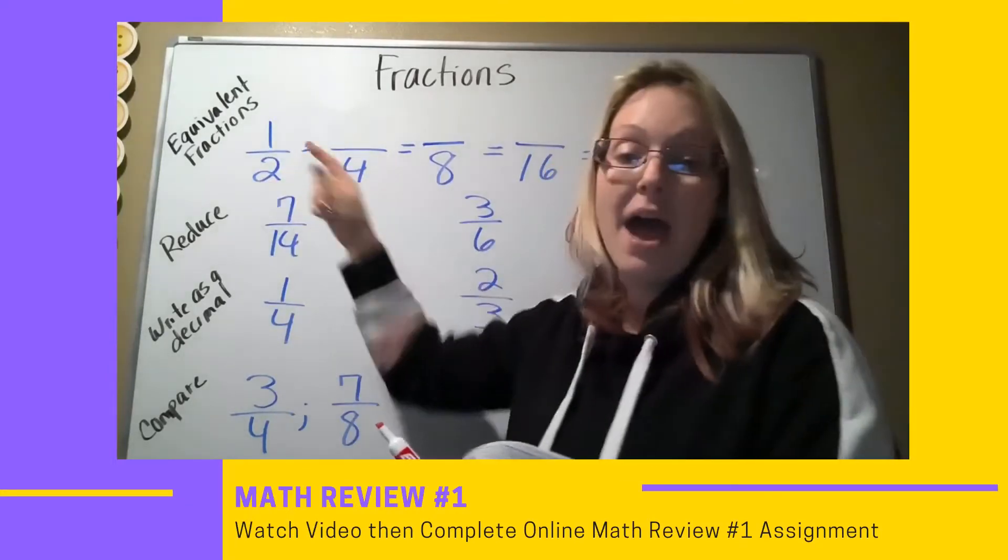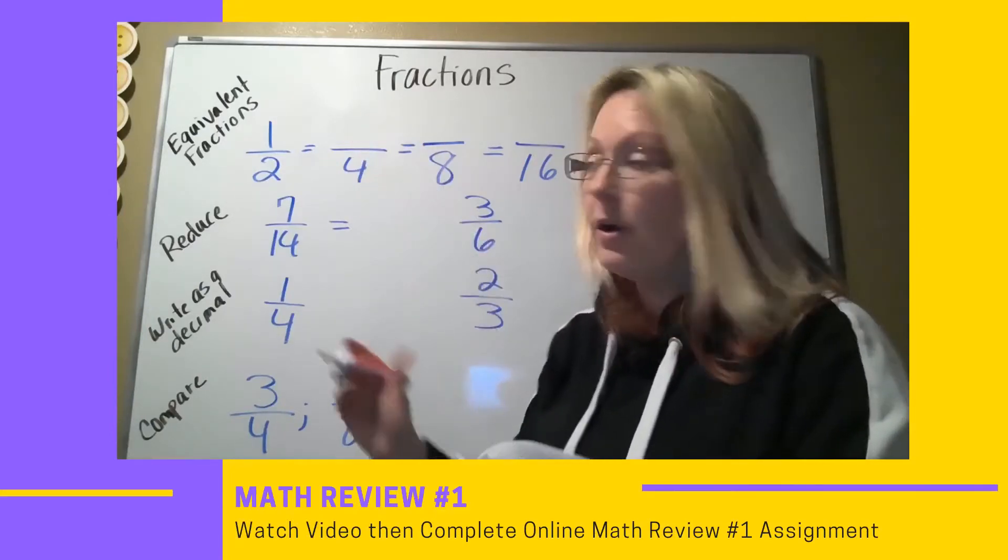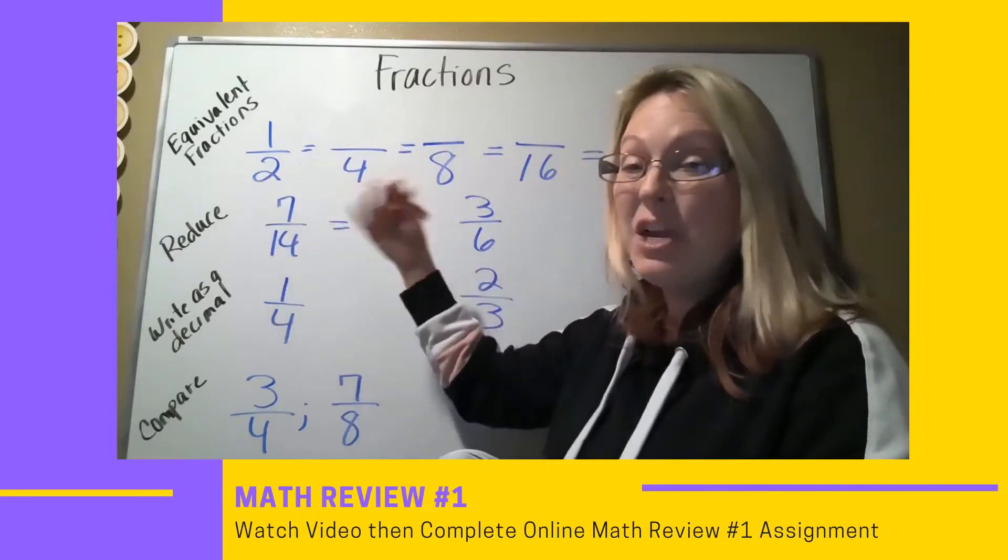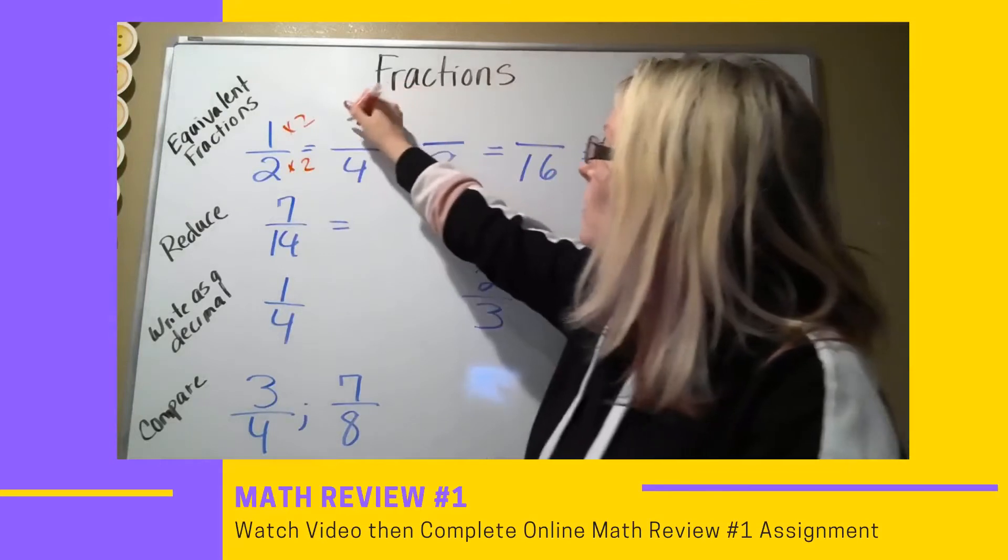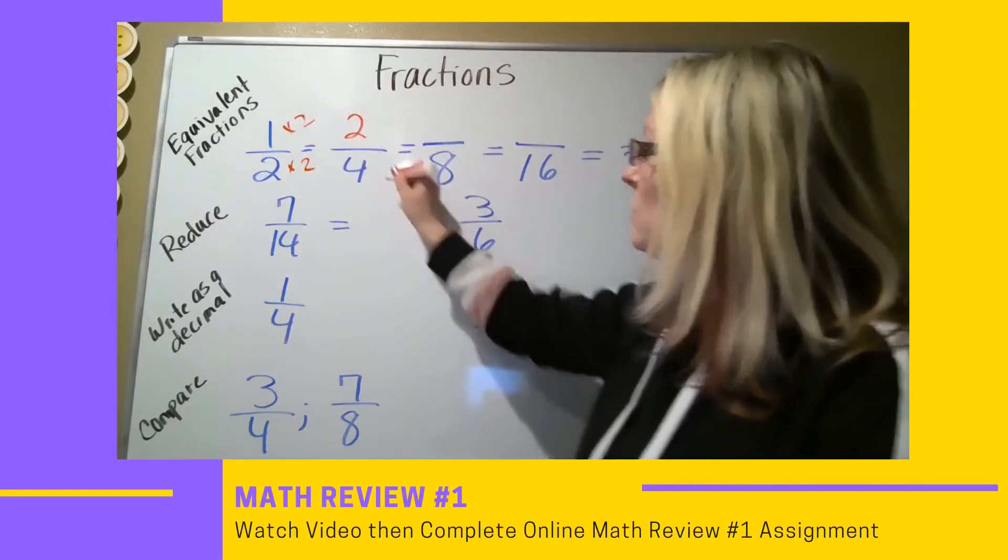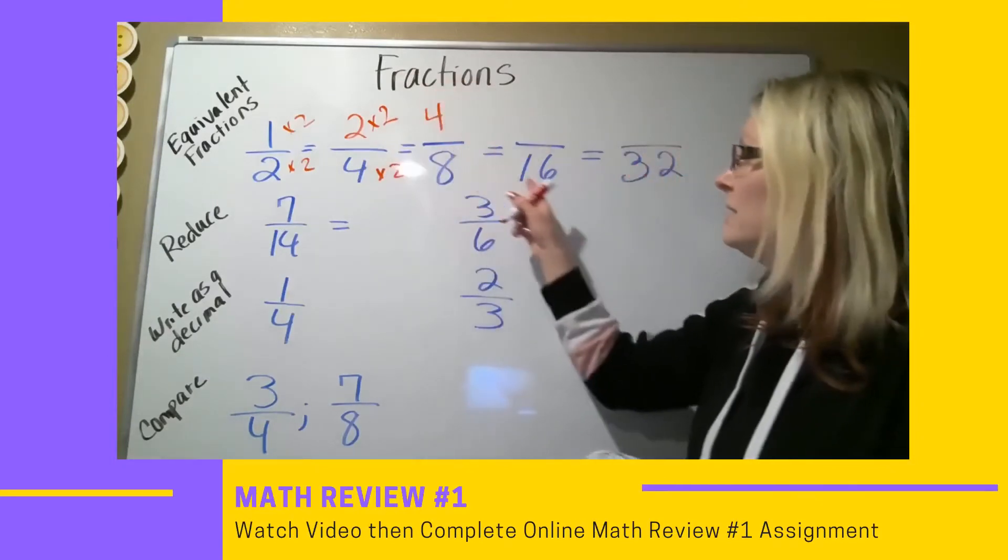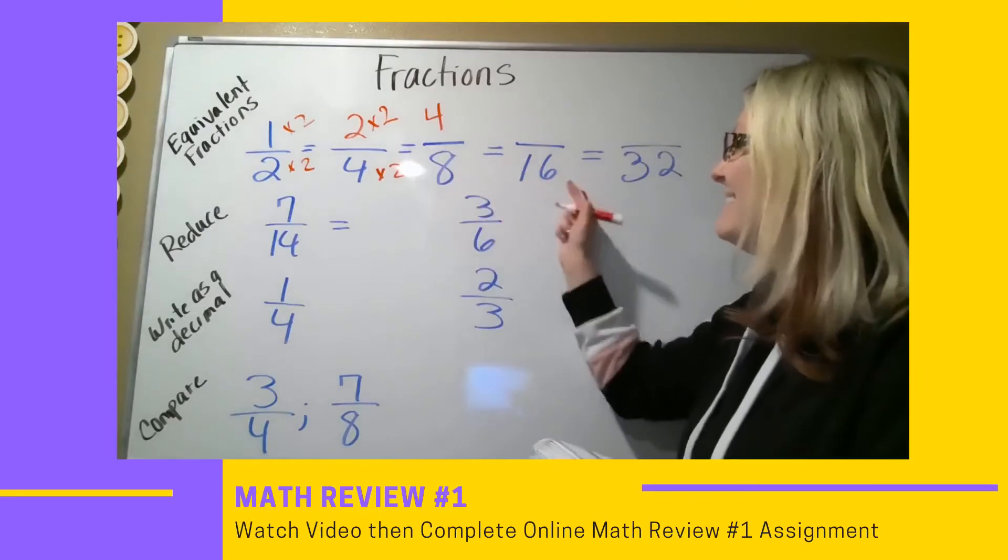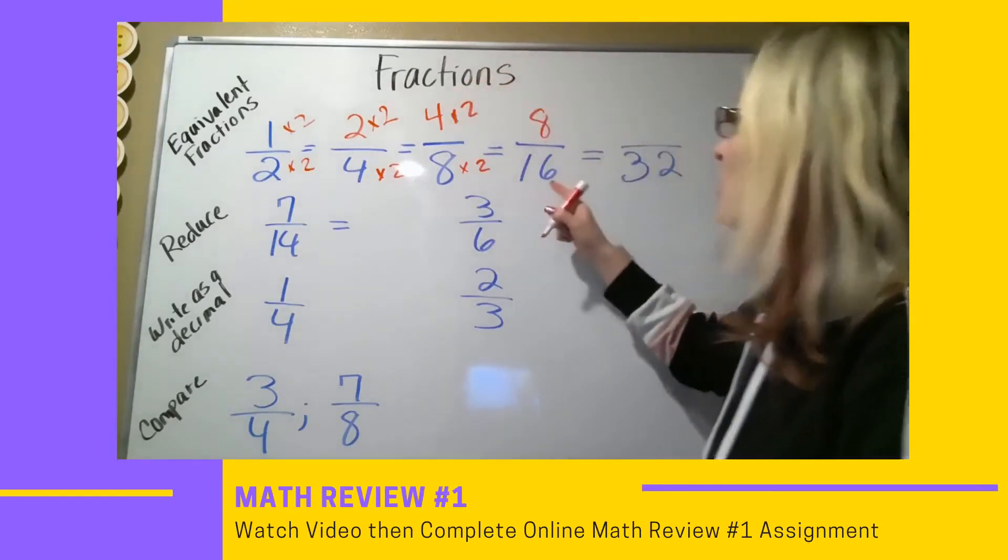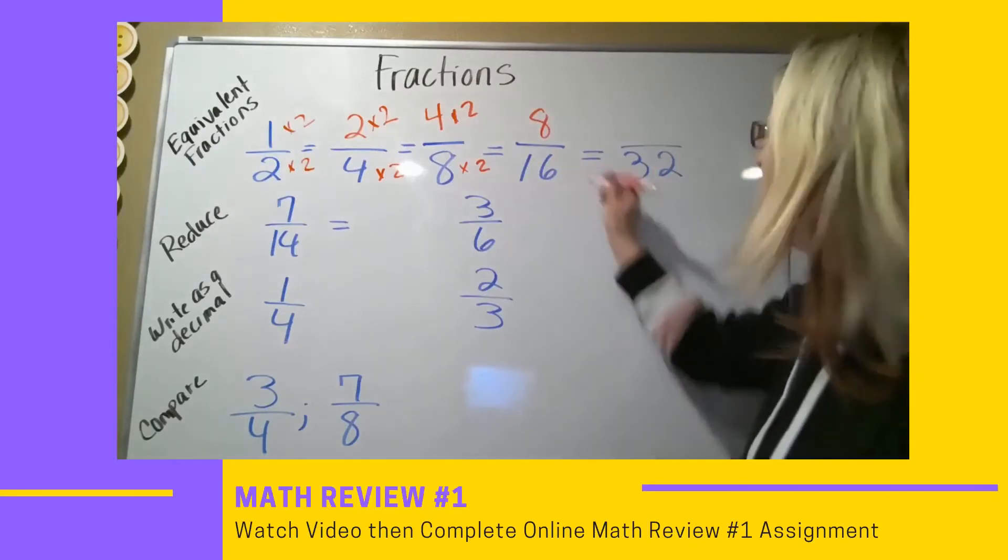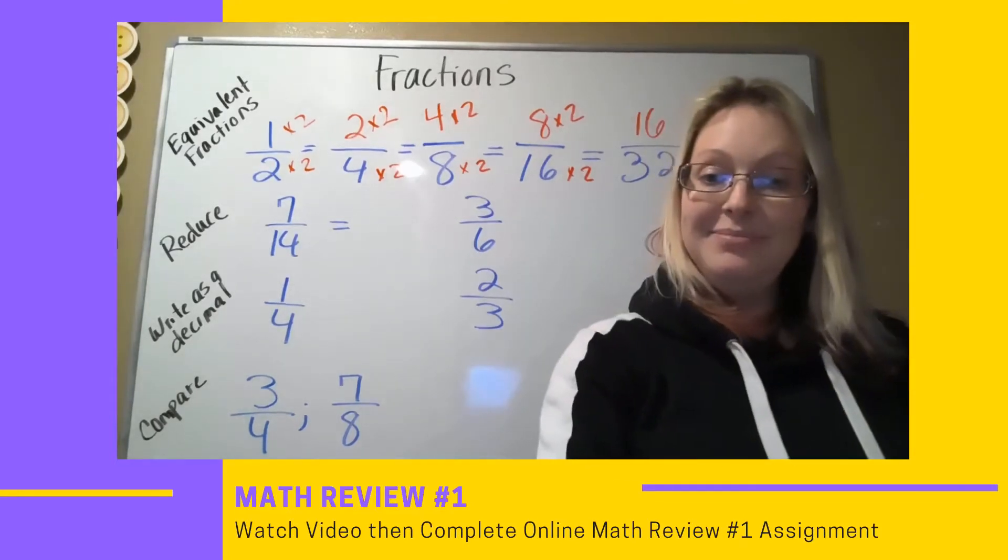I need to take one half and make it equivalent to something else. Here it gives me a denominator of 4. So, I need to find my numerator. I would do that by saying, 2 times what equals 4? 2 times 2 equals 4. Whatever I do to the bottom, I do to the top. 1 times 2 is then 2. I do the same thing. What times 4 equals 8? 2. 4 times 2 equals 8. Whatever I do to the bottom, I do to the top. 2 times 2 is 4. What times 8 is 16? 2. 2 times 8 is 16. I then do it on the top. 4 times 2 is 8. 16 times what equals 32? That would be 2. And I do that to the top. So, 8 times 2 is 16. See how I do equivalent fractions?